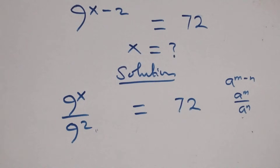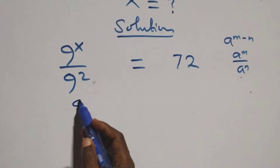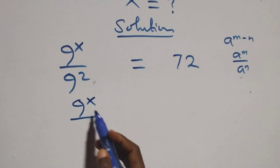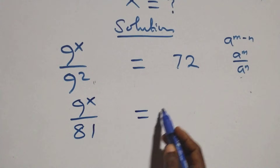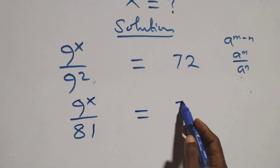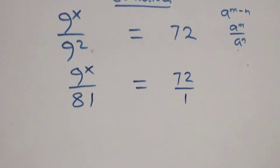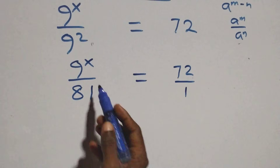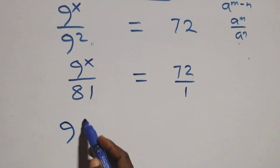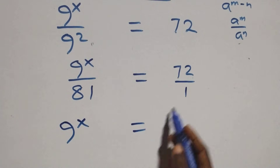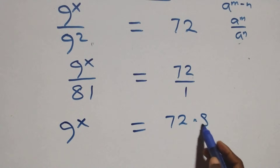We can write this as 9 raised to power x over 9 squared, and 9 times 9 as 81. This equals 72 over 1. The next step we cross multiply: 9 raised to power x equals 72 times 81.